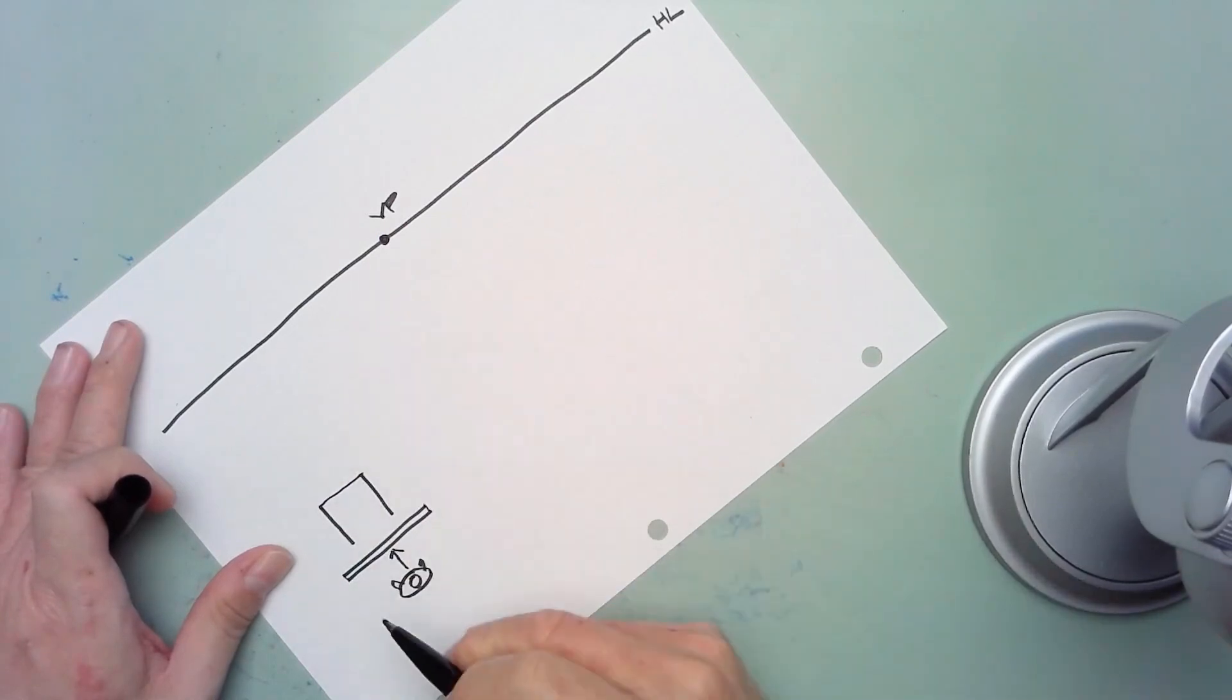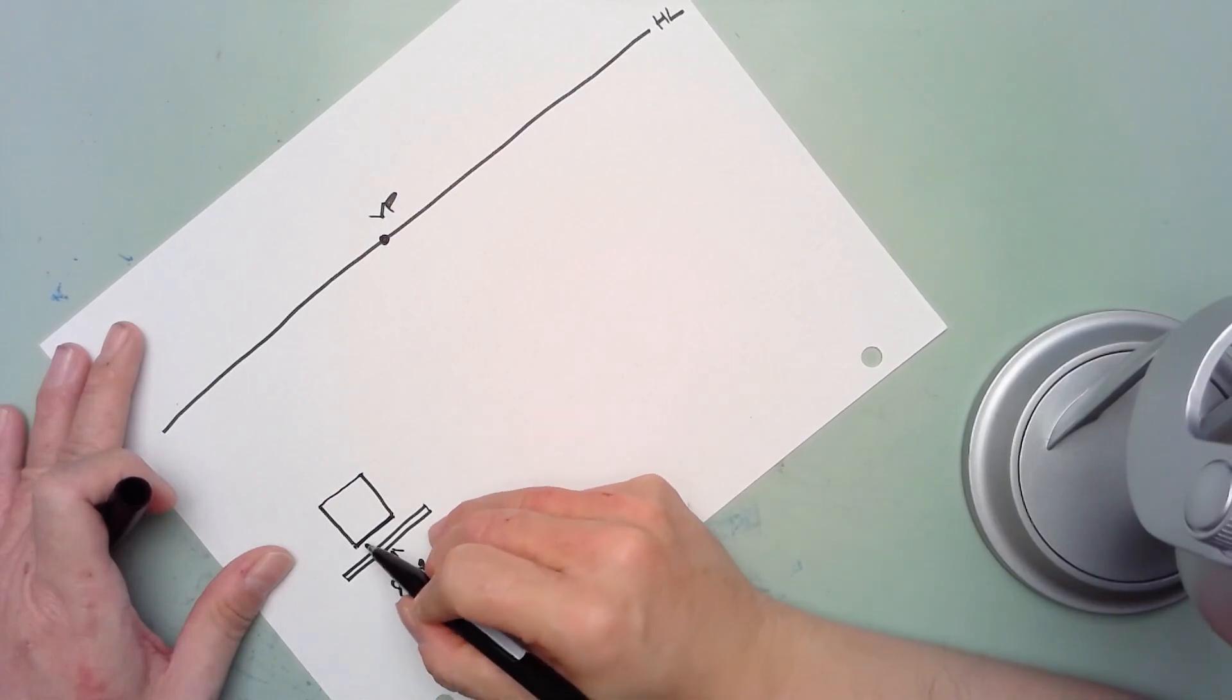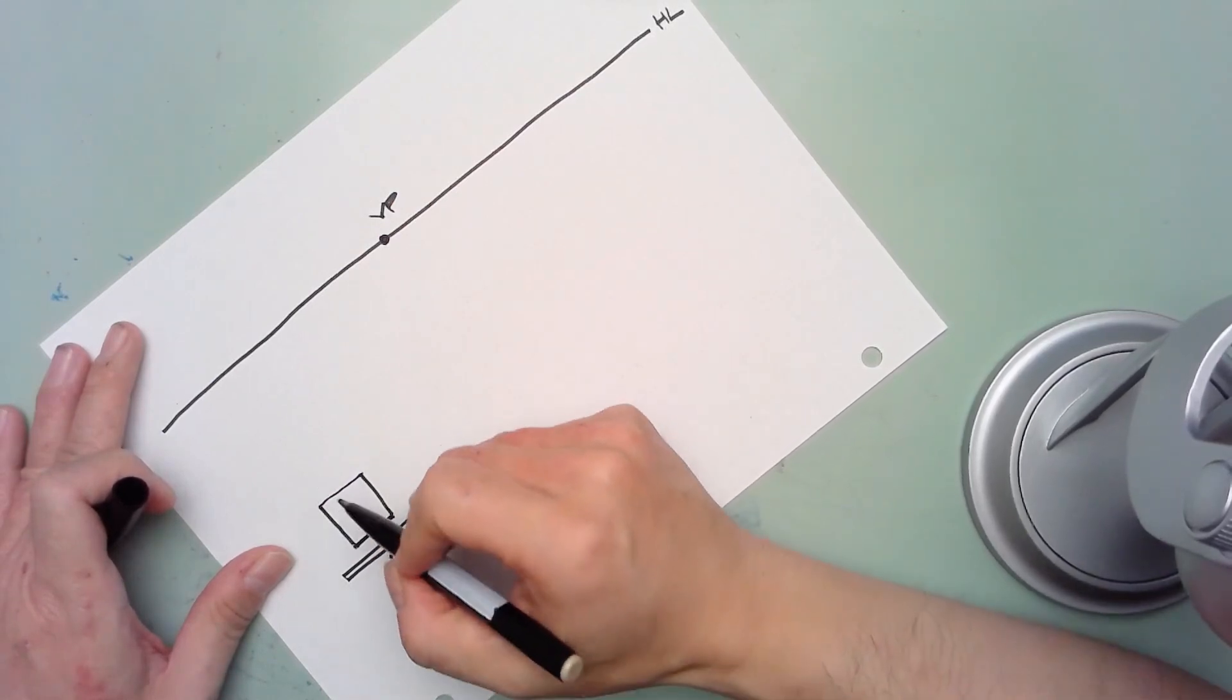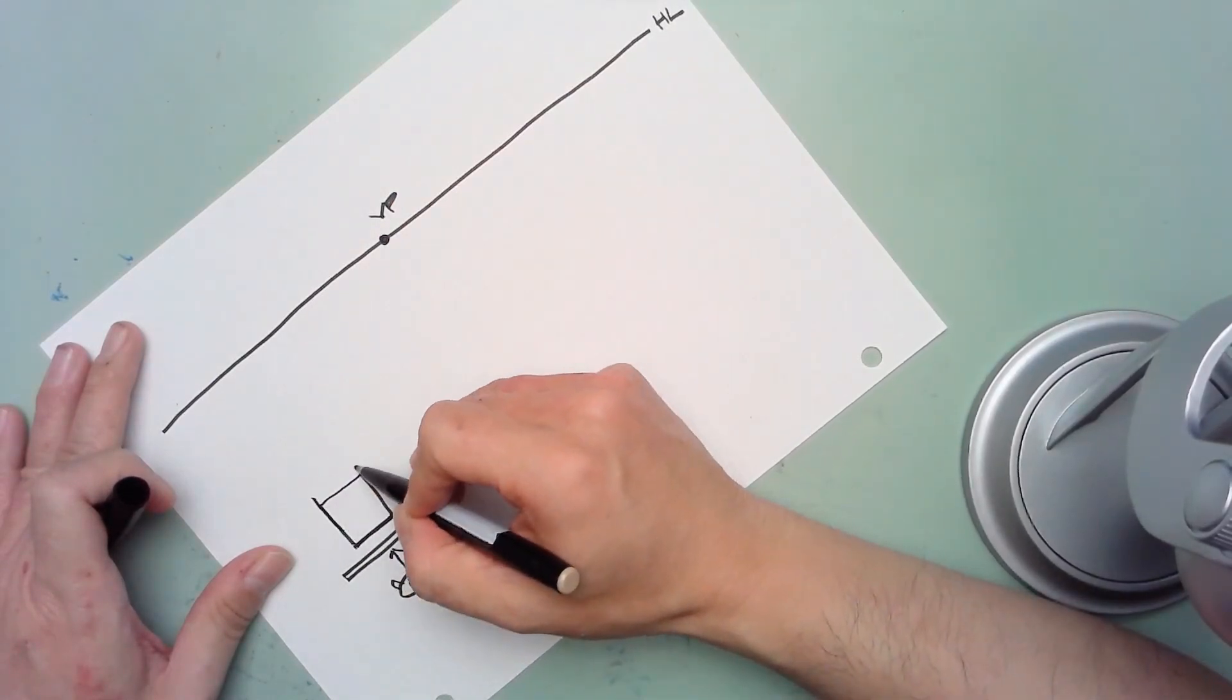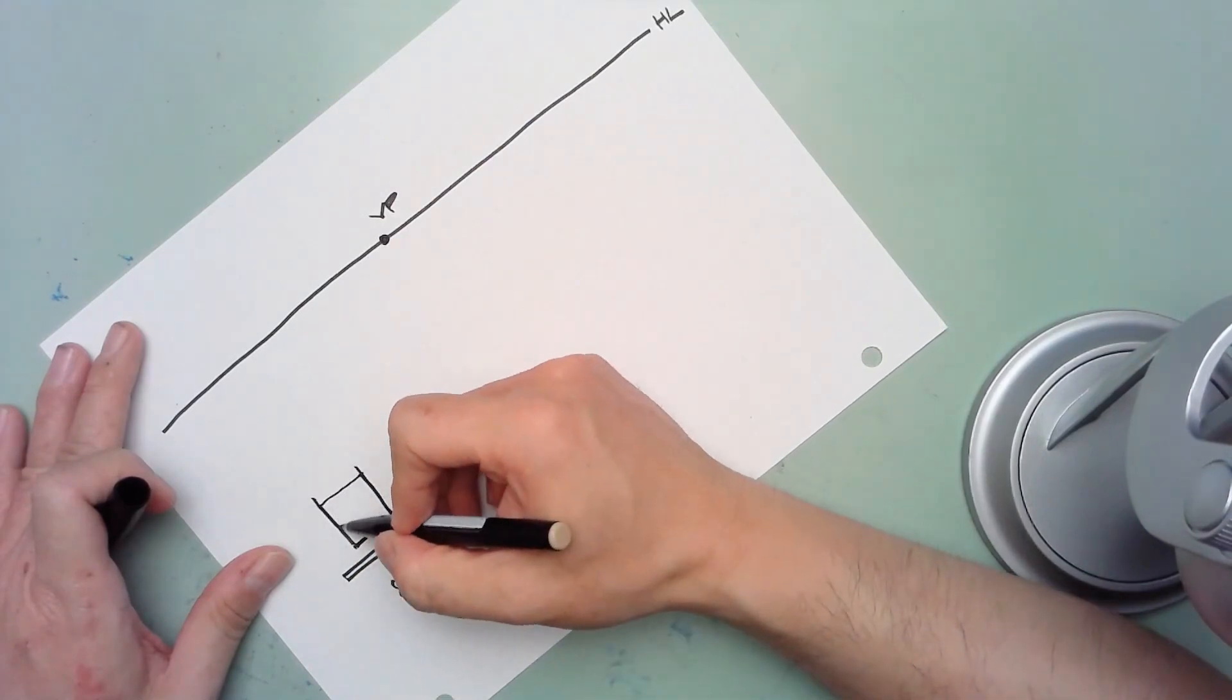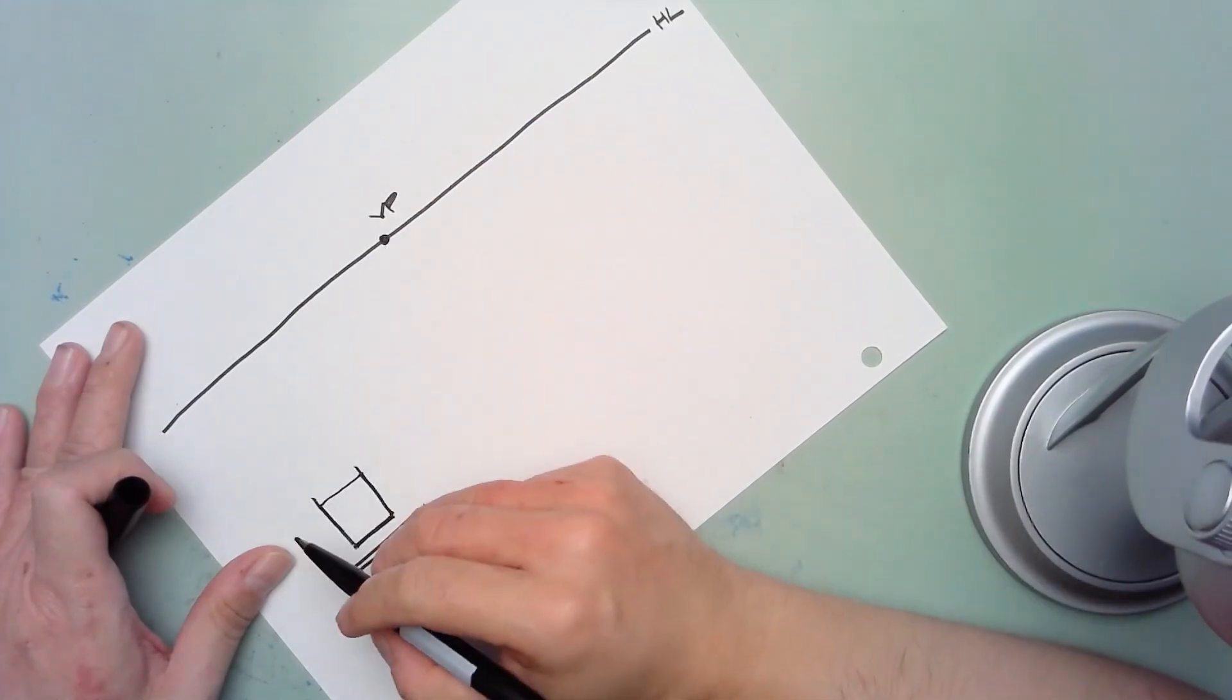You would be essentially viewing the cube so that you are looking at one of its flat faces. These two edges right here, because they're parallel, would essentially converge toward that vanishing point.